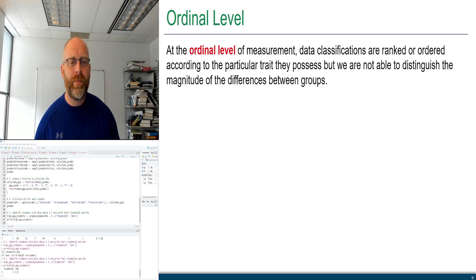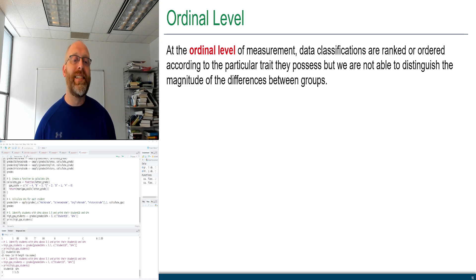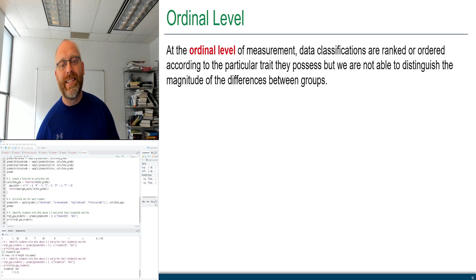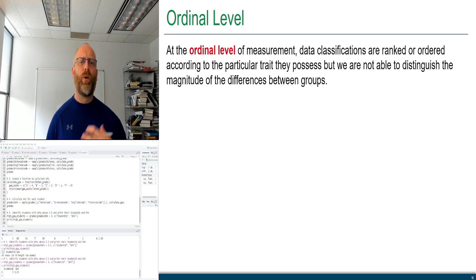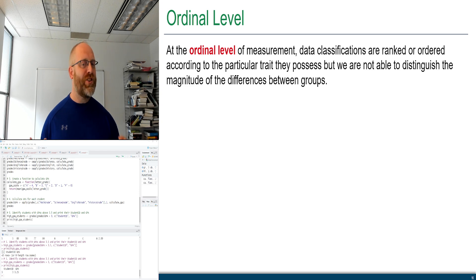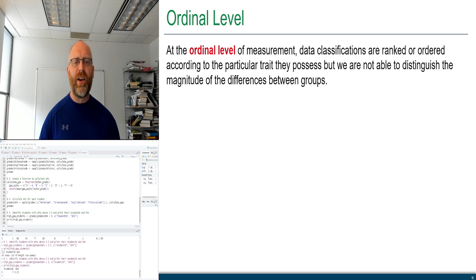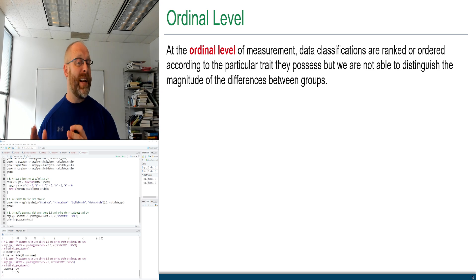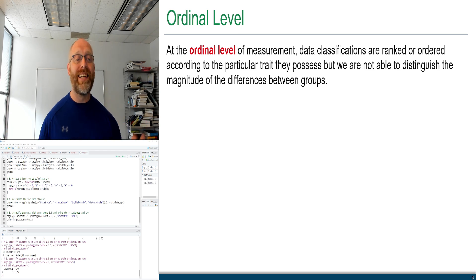At the ordinal level, data classifications are ranked or ordered according to a particular trait, but we cannot distinguish the magnitude of the difference between groups. So we have order, but we don't know how much greater one value is than another. For example, performance ratings of poor, good, great, excellent have a natural ordering — but we can't say how much better 'great' is than 'good'.